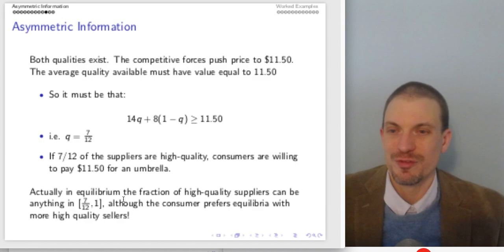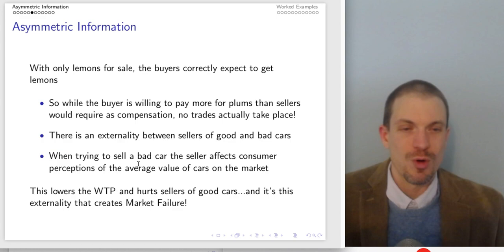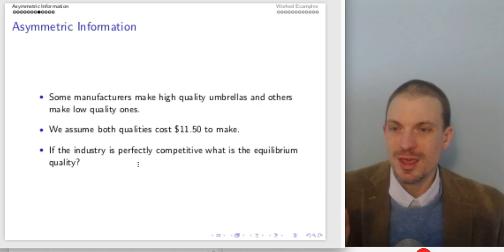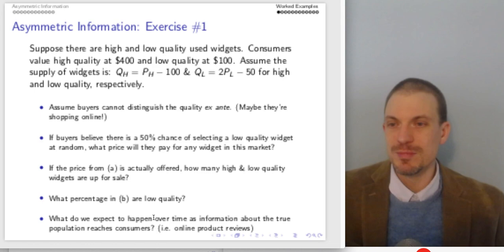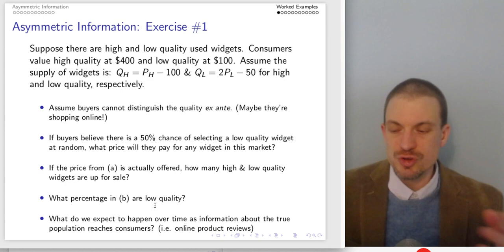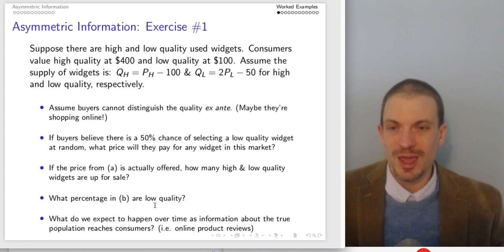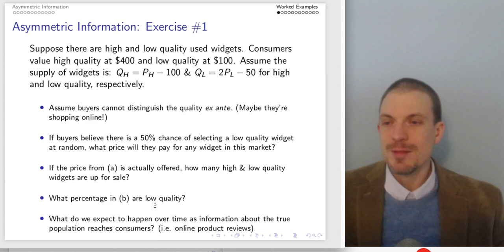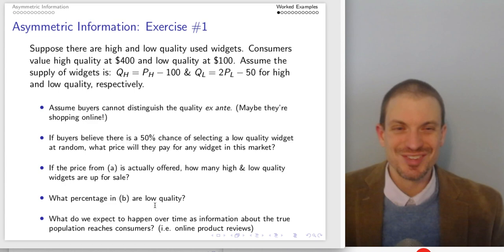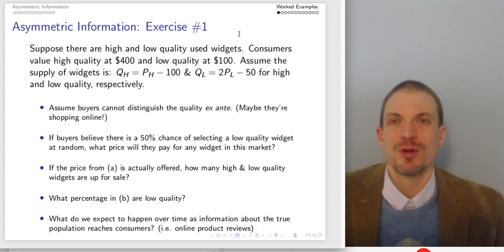In the cars example, the presence of bad-quality cars destroys the market for good-quality cars — that's the market failure. In this umbrella example where firms are choosing their quality, the possibility of low-quality umbrellas destroys both markets entirely. You can think about the things sellers would try to do — guarantees, warranties, or third-party verification — to try to reinforce and infuse confidence into consumers. In the present day, examples like TrueCar or Carfax try to restore some of the information balance.